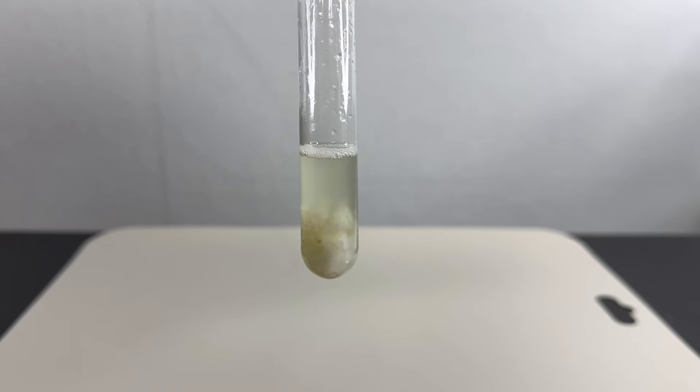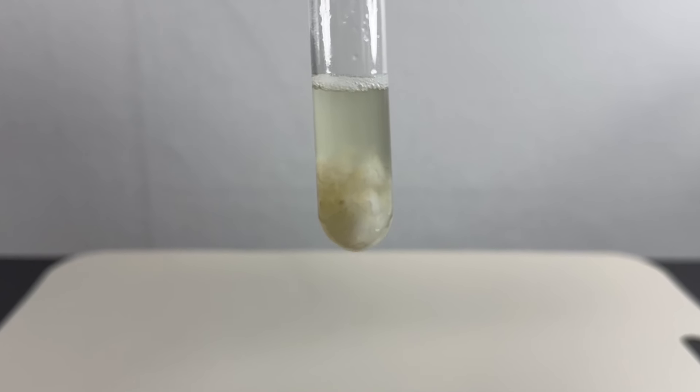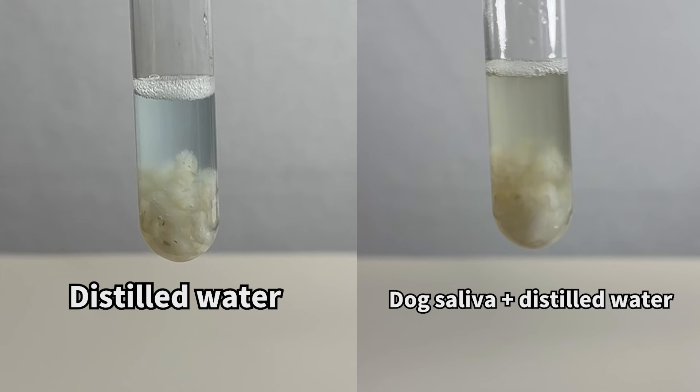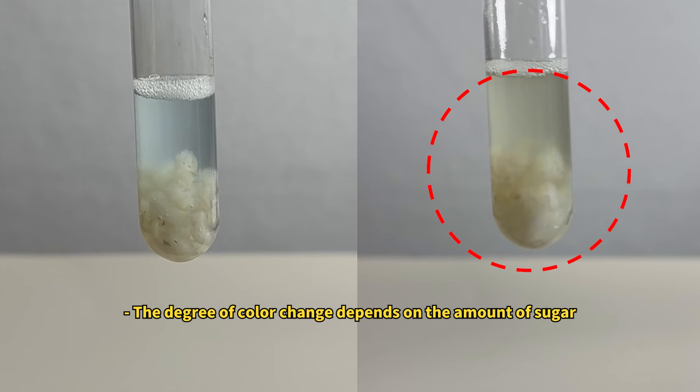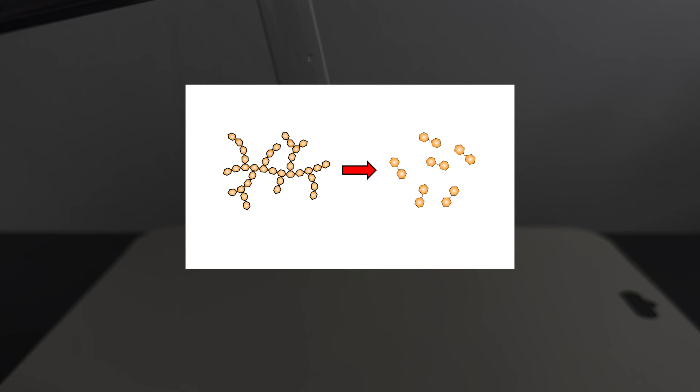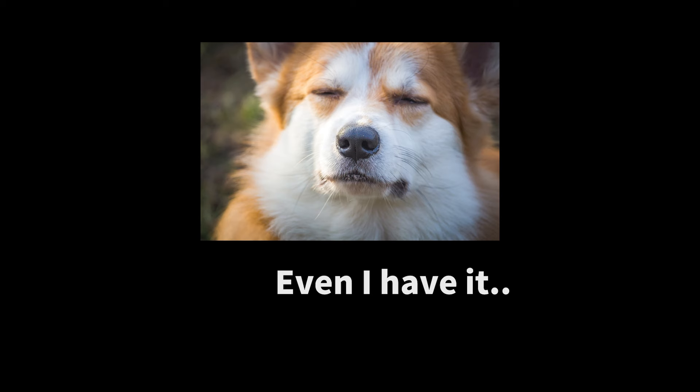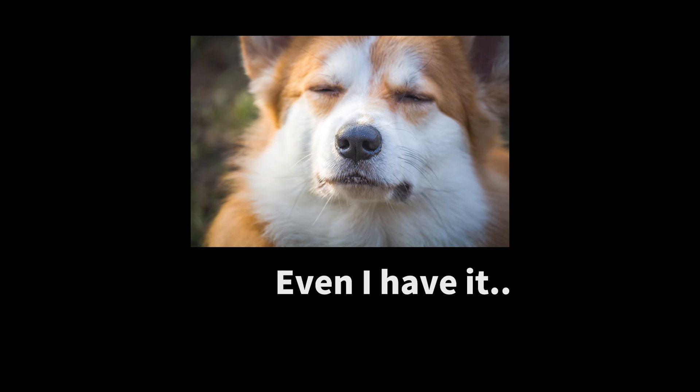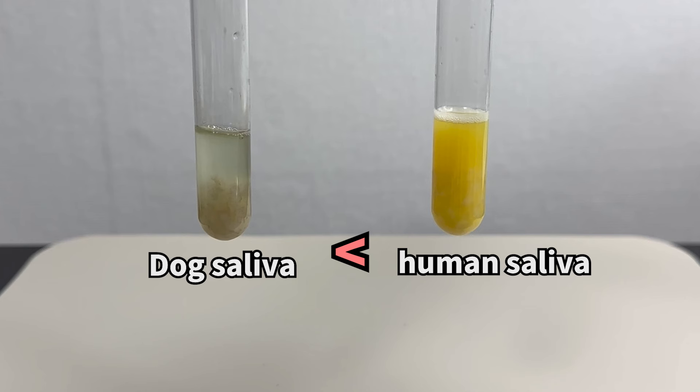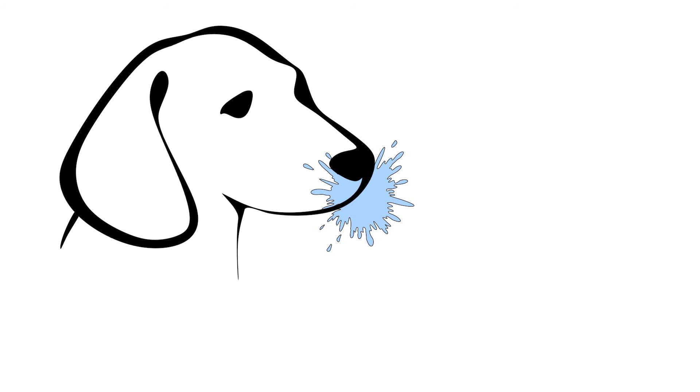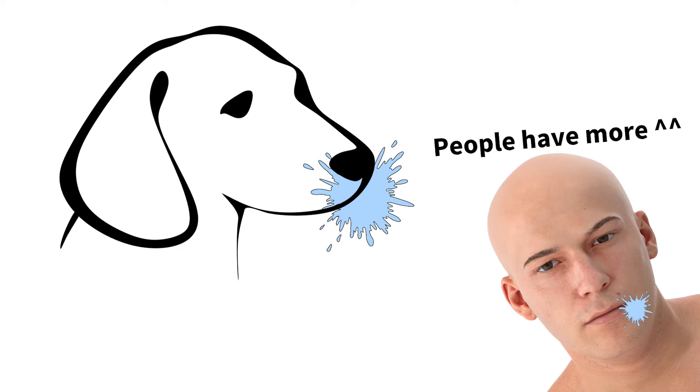Hmm, there seems to be no significant change. But upon closer inspection, there's a slight yellowish tint, more than when just the rice grains were present. This suggests that some starch was broken down, indicating the presence of amylase in dog saliva. However, the reaction isn't as strong as in humans, because the concentration and activity of amylase in dog saliva are much lower.